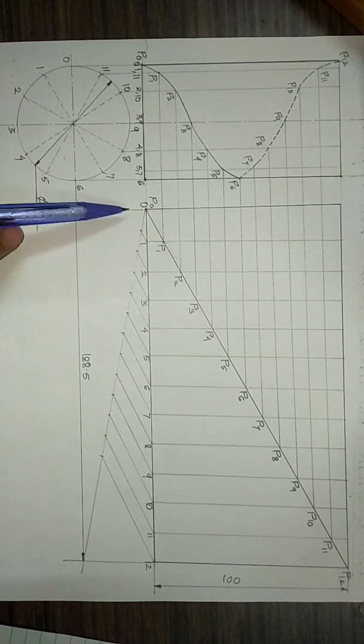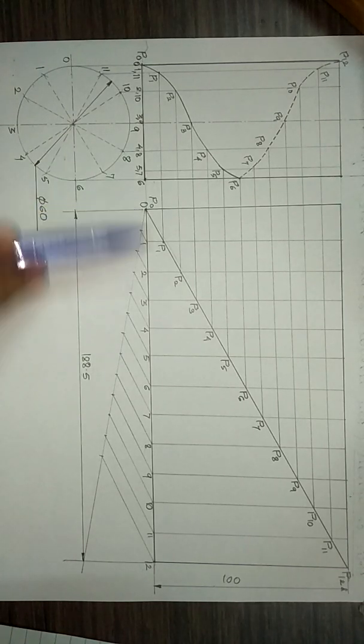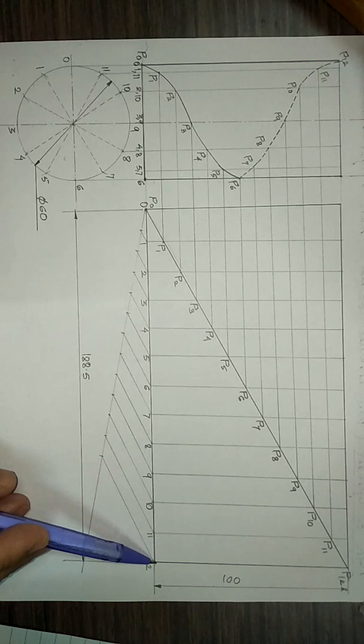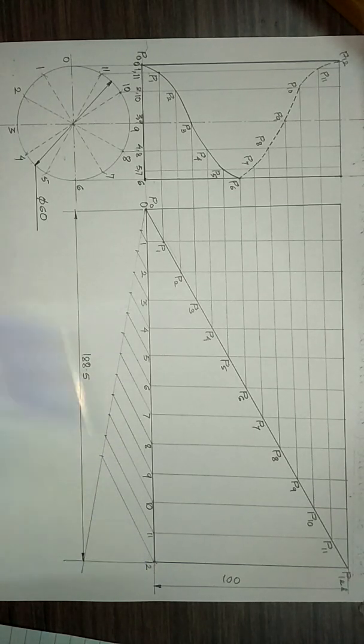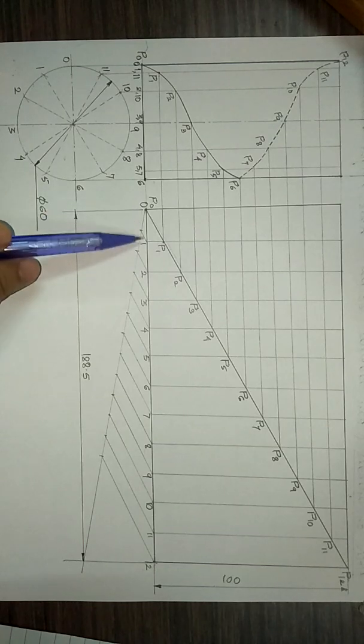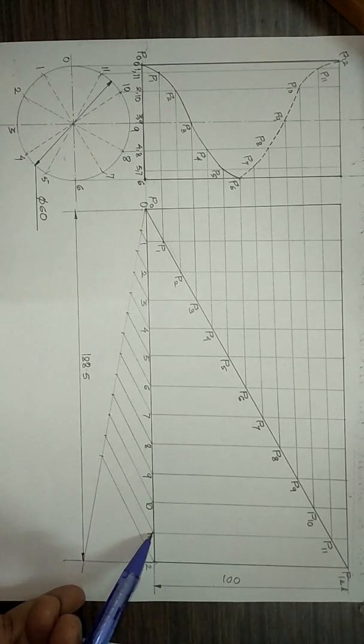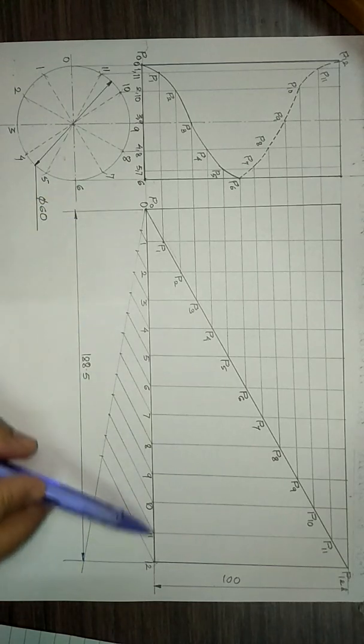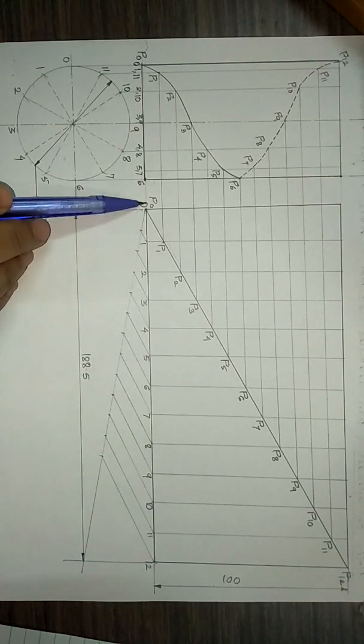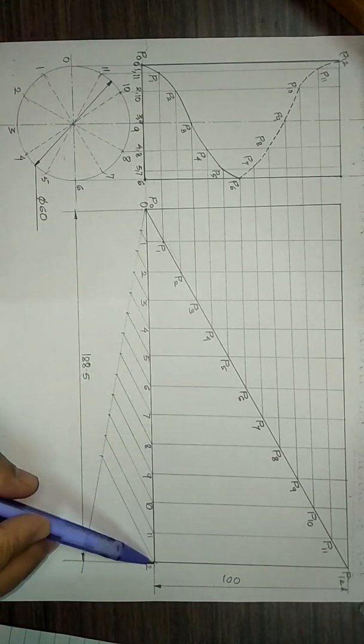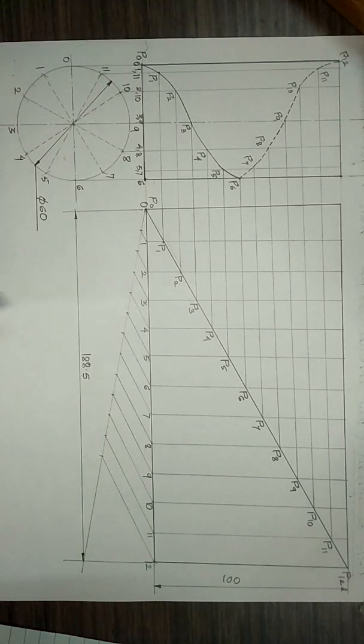The next step, we have divided this side of the rectangle into 12 equal parts: 1, 2, 3 up to 12. Then we have drawn vertical lines at these points from 1, 2 up to 11.